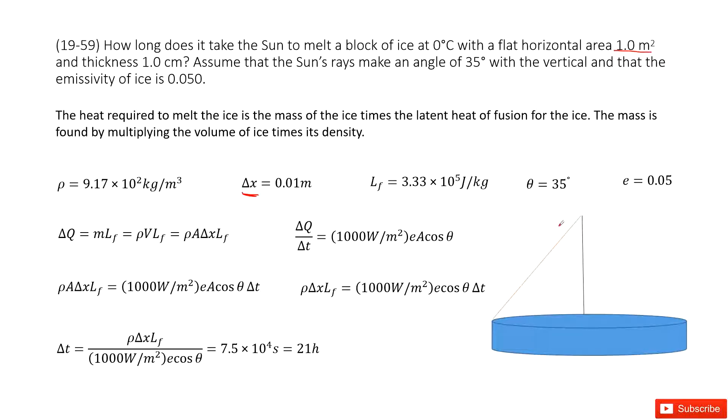We consider this sun ray makes an angle of 35 degrees, theta, with the vertical. The emissivity constant is given. How long does it take for the sun ray to melt this ice?